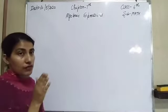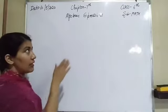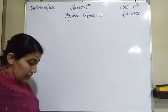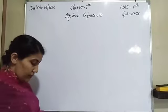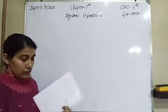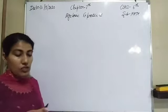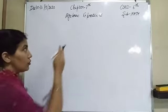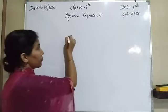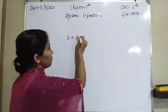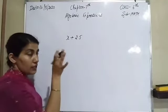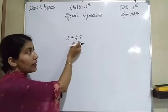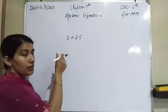Firstly, I'm going to explain what is an algebraic expression. When I write an expression, I will explain in which way we can say that it is an algebraic expression. Look at here — we have x plus 25. An algebraic expression is a combination of variables and constants.